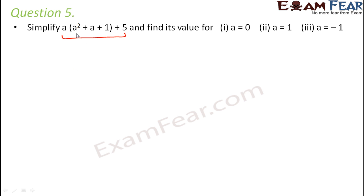Now a multiplied to each of these can be written as a × a² + a × a + a × 1 as per the distributive law, plus 5. So this becomes a × a² is a³, a × a is a², a × 1 is a, plus 5.